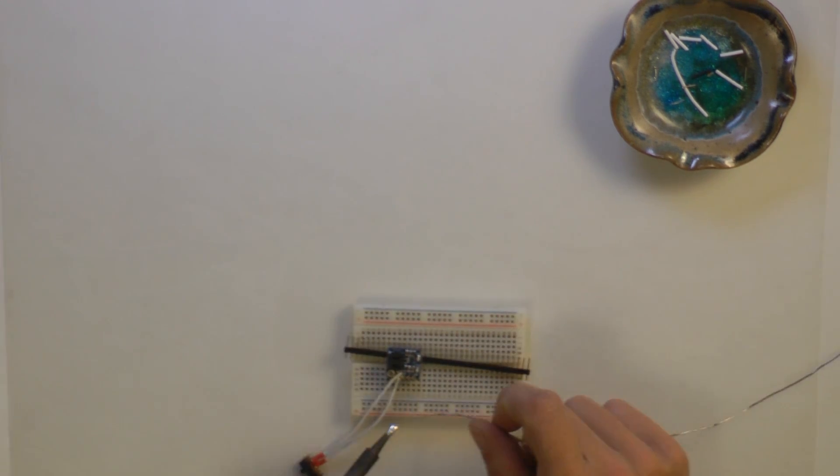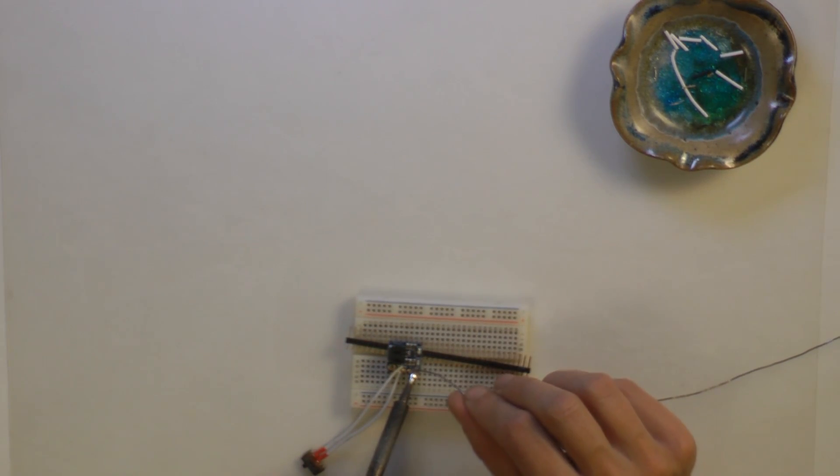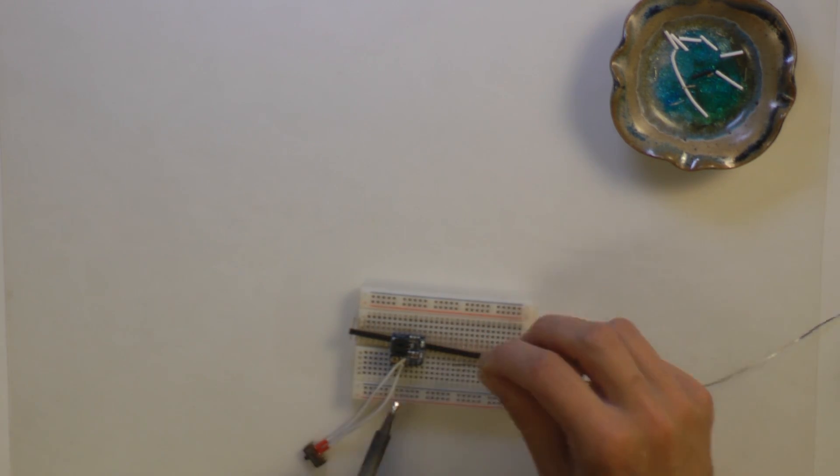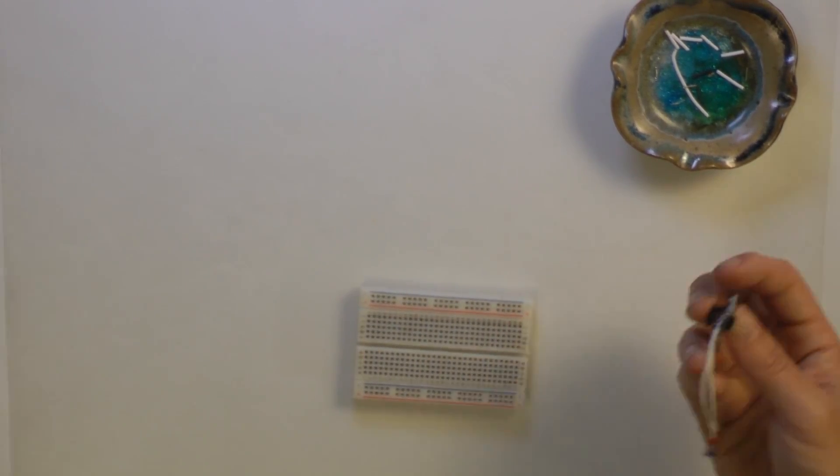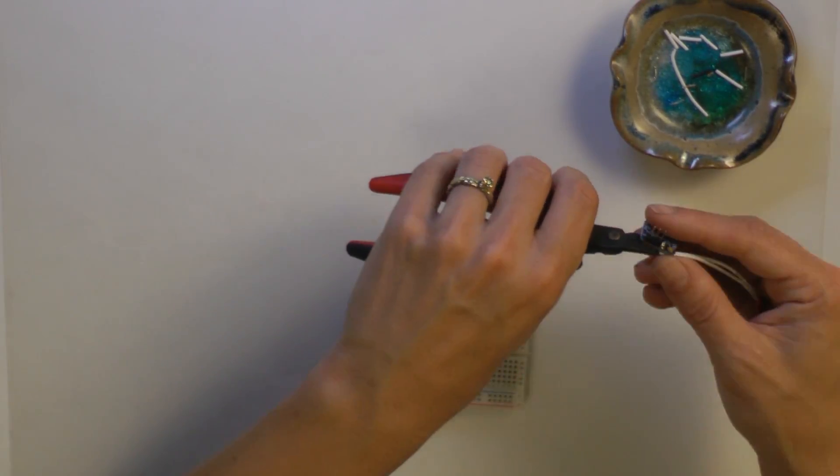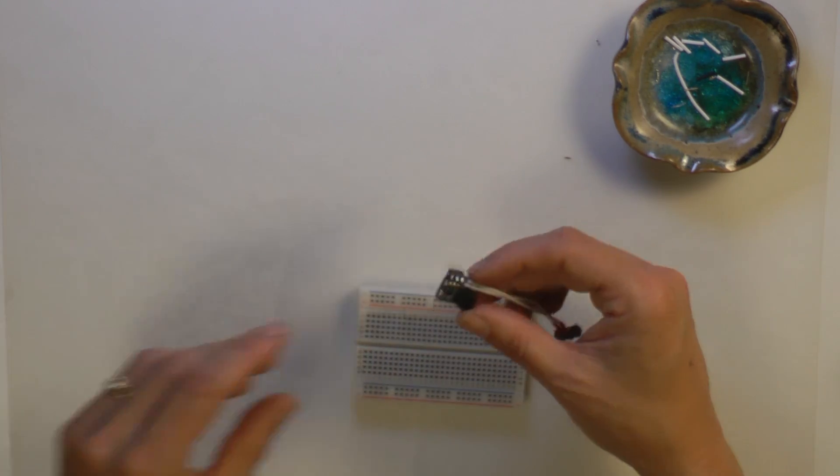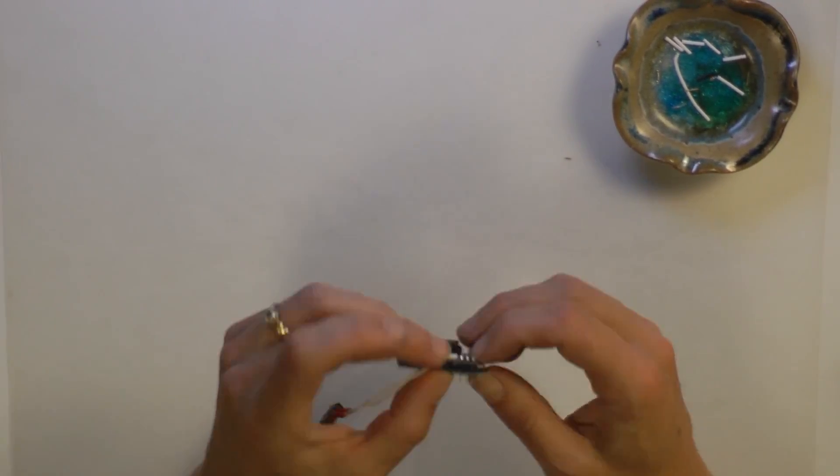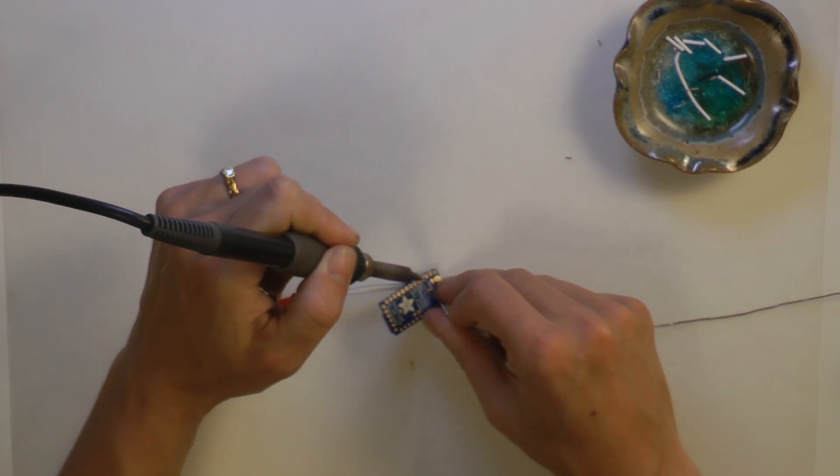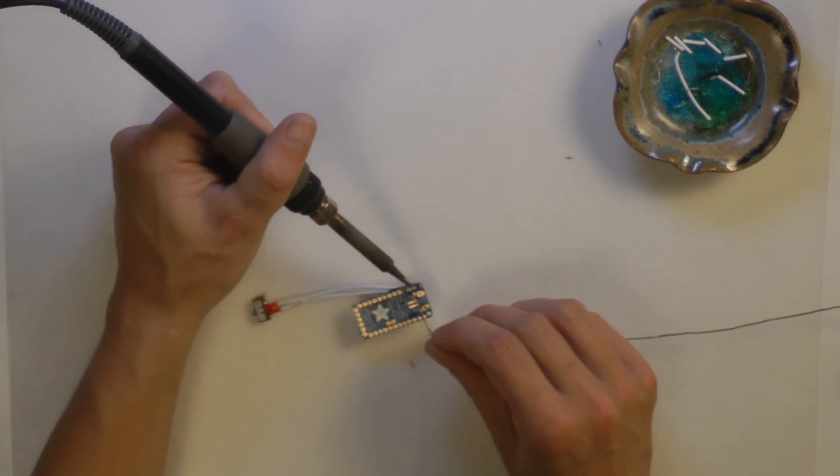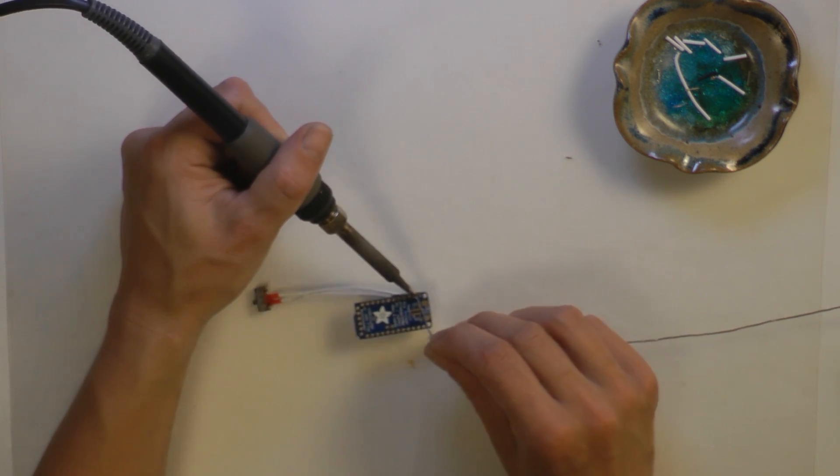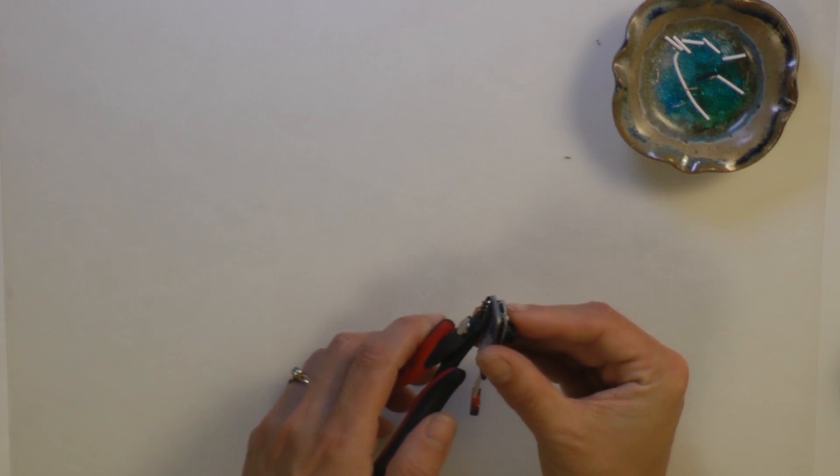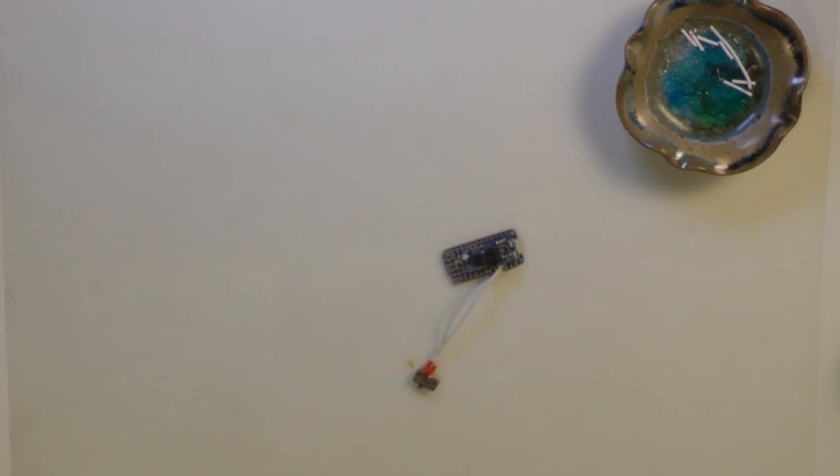Solder the included header onto the backpack charger. Attach it to the Pro Trinket, lining up the battery and ground pins. Trim the legs close and then plug in a battery to be sure the switch is working.